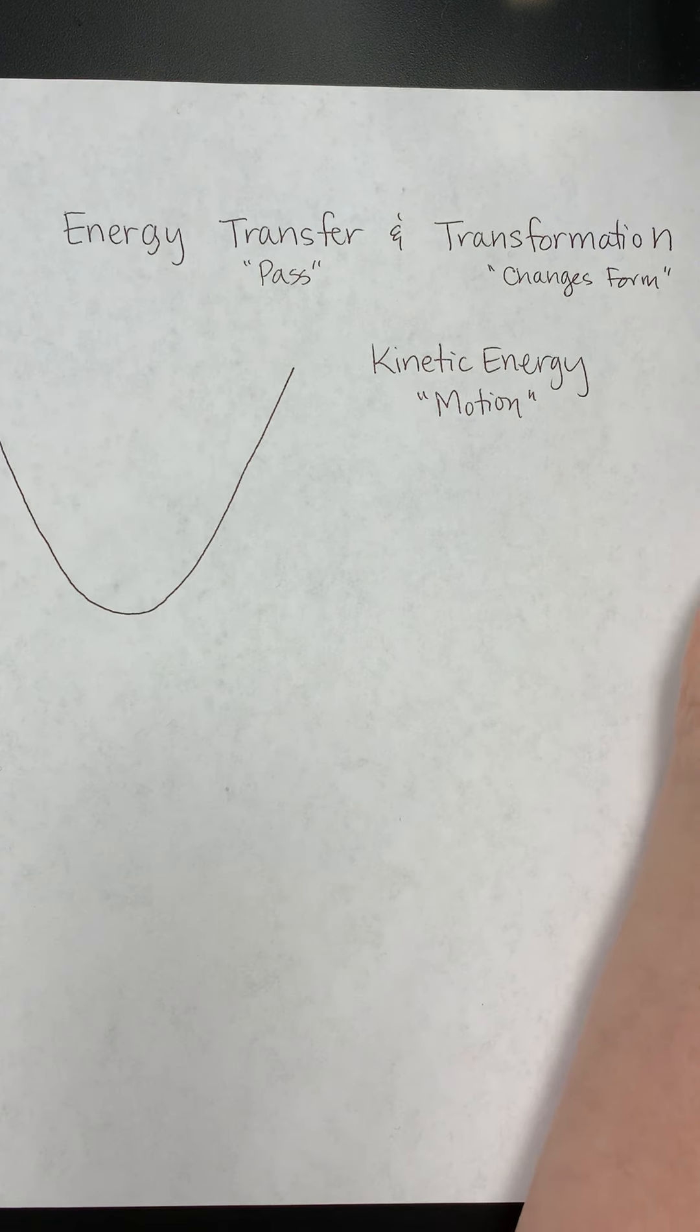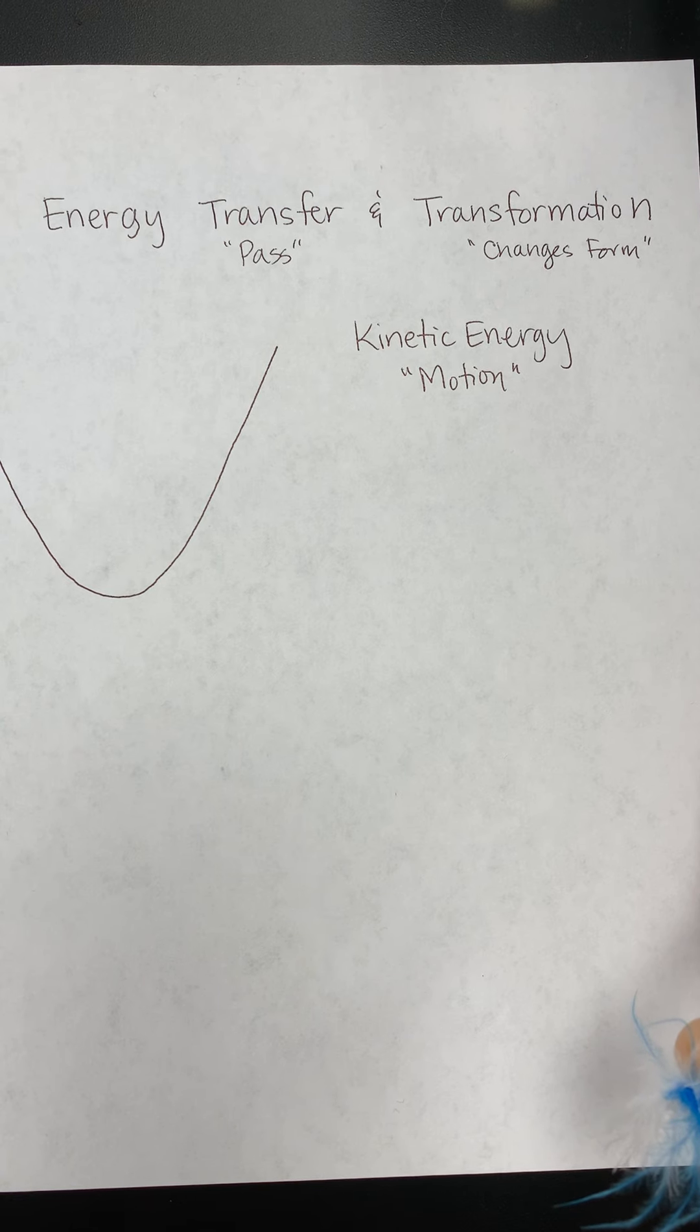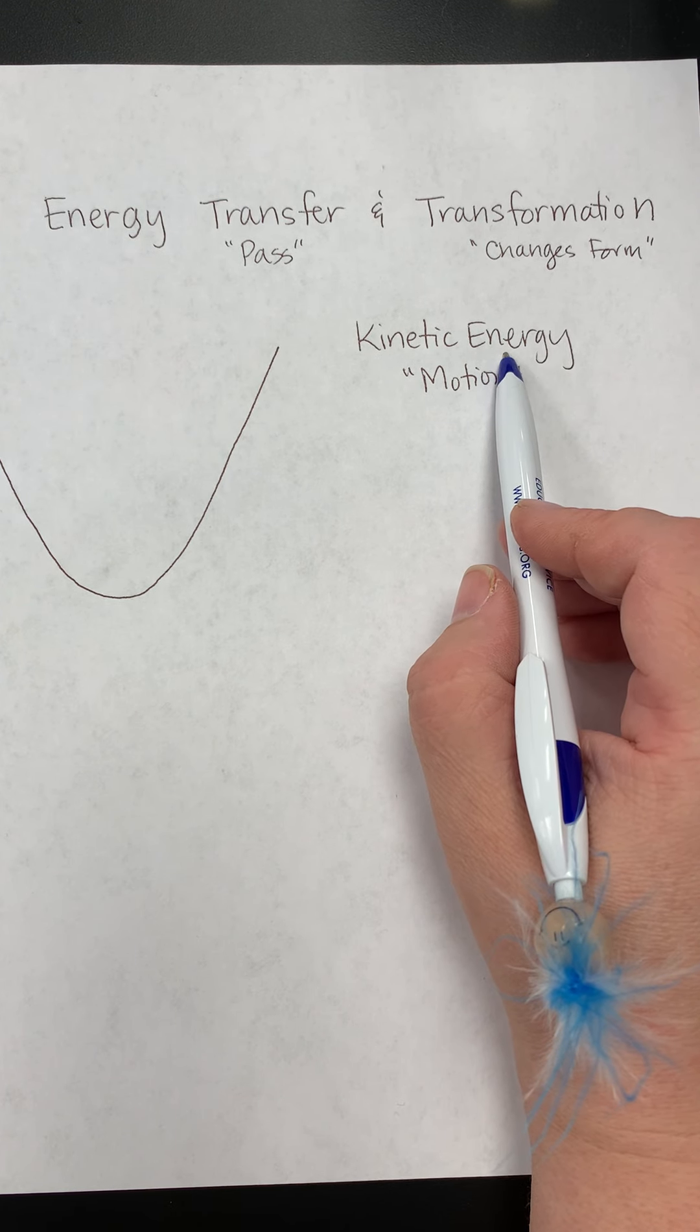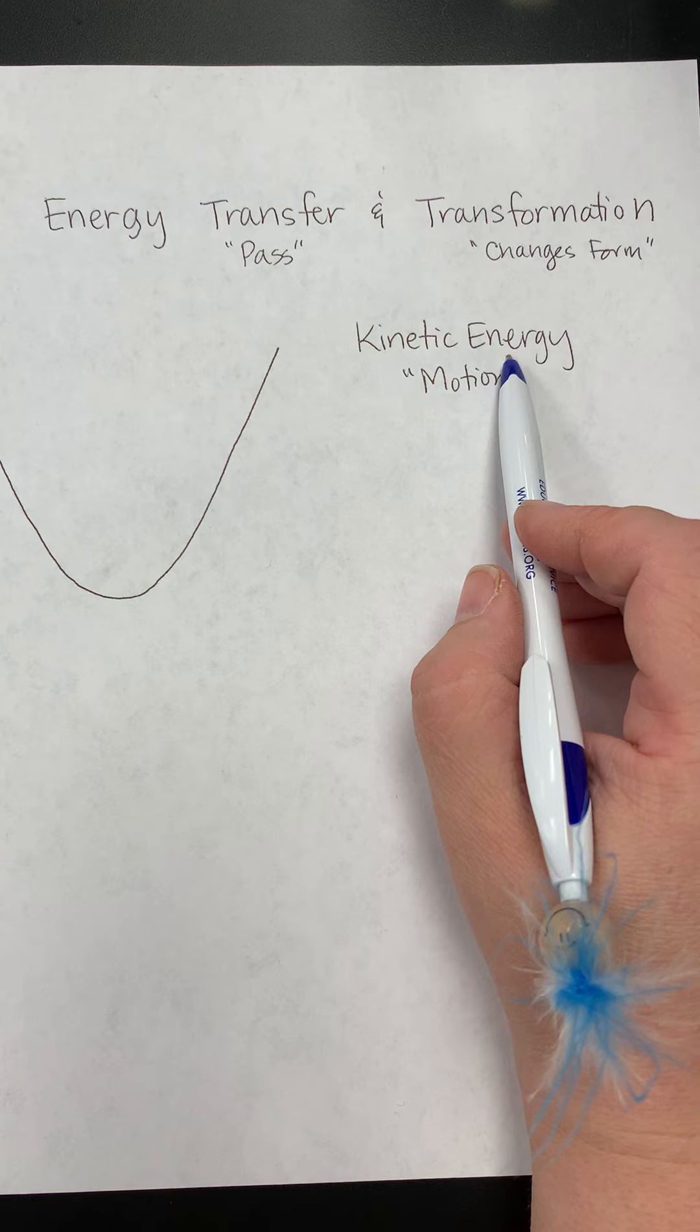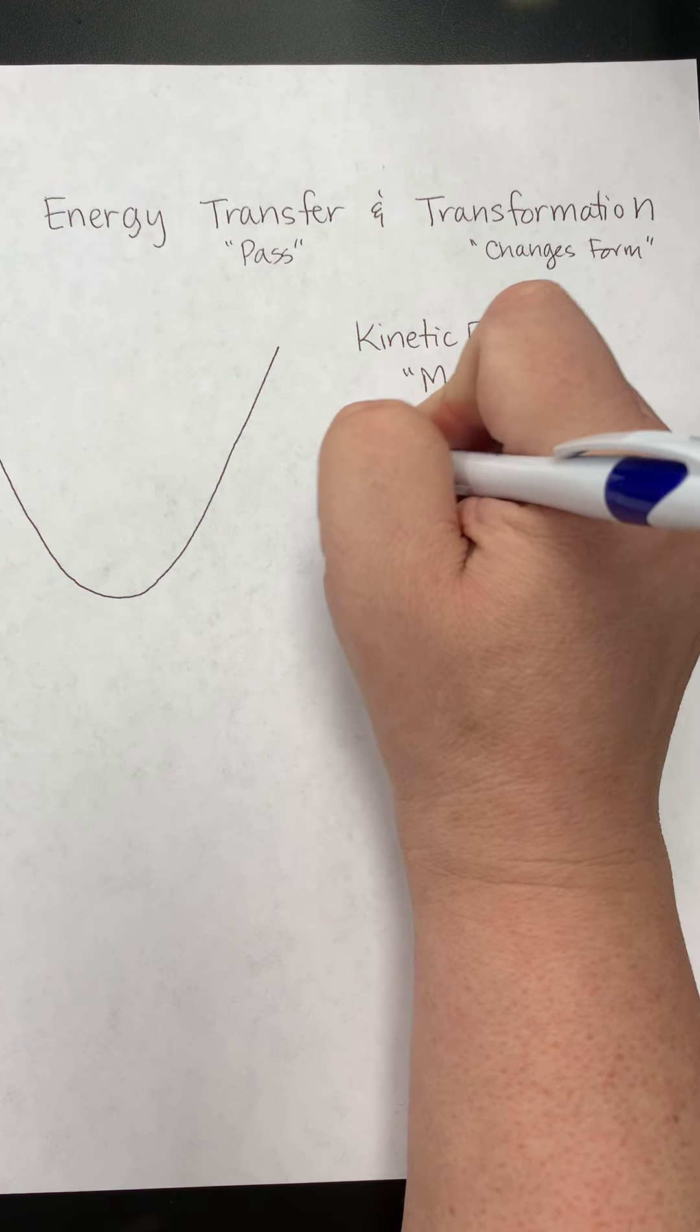And while there is absolutely microscopic motion that's happening all the time in all matter, for the purposes of our collisions unit, we're thinking about kinetic energy as the energy of the total object. So is the object itself in motion, or is the object itself at rest?